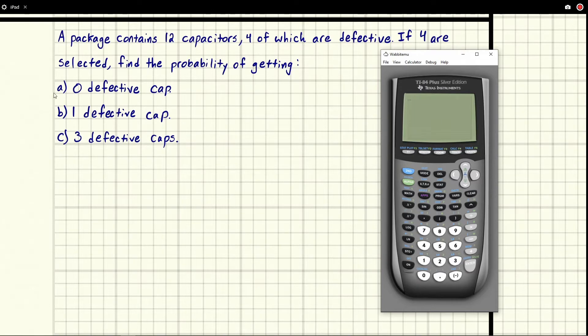So let's see here. Zero defective capacitors. We've got 12 of them in total, four of them are defective. In this case, we don't get any, and we're picking four of them. So that means our sample space, the bottom number, is always going to be 12 choose 4.